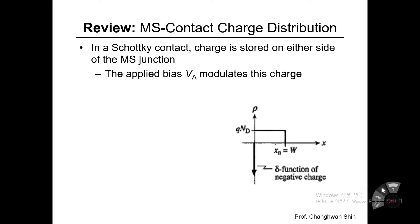That is the basic concept of why the capacitance value is modulated with externally applied bias V_A. At thermal equilibrium or for a given DC voltage, the charge across the MS contact is set and designated at a certain position. However, if the externally applied bias voltage is varying and modulating, then the charged particles within the MS contact should be rearranged and redistributed.